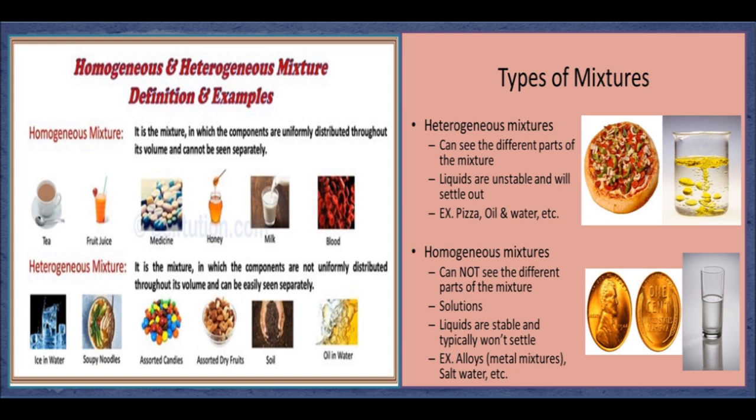Heterogeneous mixture. Take a spoonful of soil and mix it in a glass of water. Stir the mixture and leave it undisturbed for some time. You will see that the heavier particles have settled down — there are more soil particles in some places and less in others. This uneven, non-uniform distribution of particles characterises a heterogeneous mixture. Examples include a mixture of oil and water, and chocolate chip cookies.